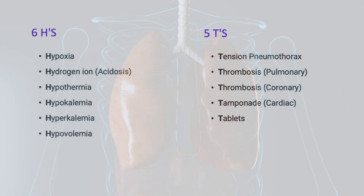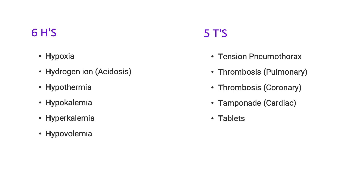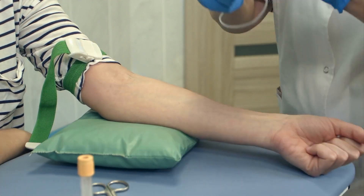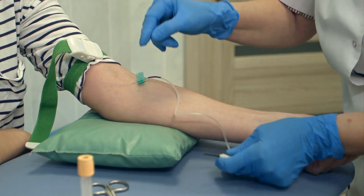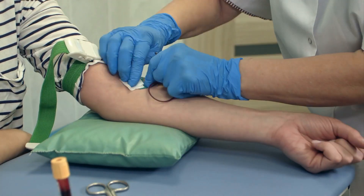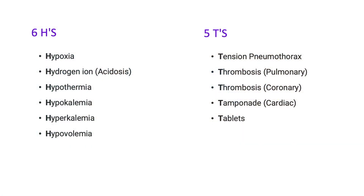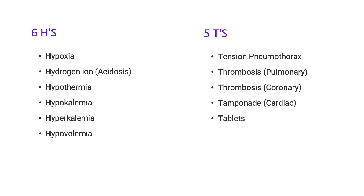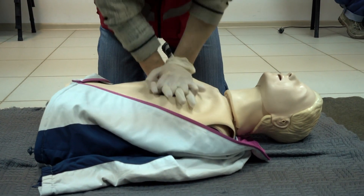If I cannot feel a pulse with high-quality chest compressions, I need to dig deeper. Move down to the abdomen — check the temperature. Is the patient cold or warm? Move to the arm and draw bloods. We want to check for hyper- and hypokalemia, hyper- and hypoglycemia, and think about toxins and cardiac enzymes. Last but not least, I can give fluids — specifically if there's a history of bleeding or trauma — to rule out hypovolemia. Through all of this, good quality CPR is ongoing.